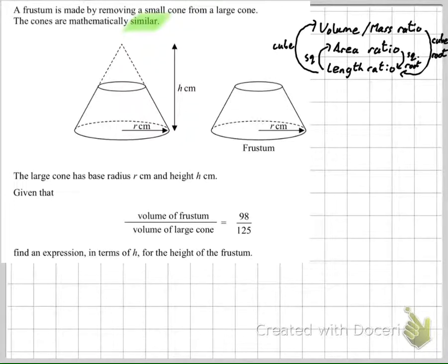Now in this particular question, we're only interested in volume and height. There it is, height. So let's get rid of the area nonsense from the diagram. And we're actually only going to be moving from volume to length. So from that diagram, we note that we are going to be cube rooting that ratio at some point.